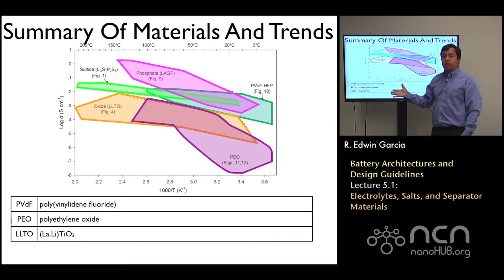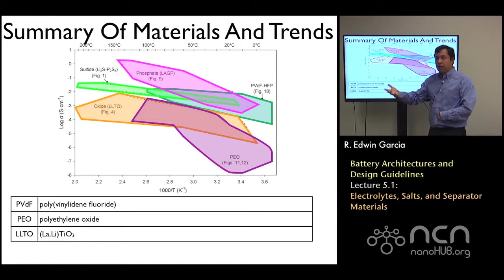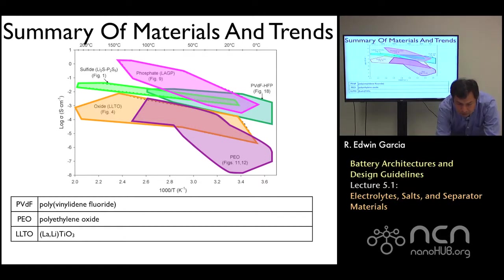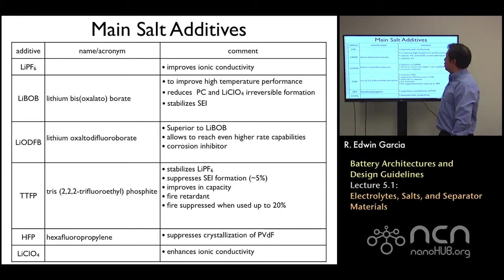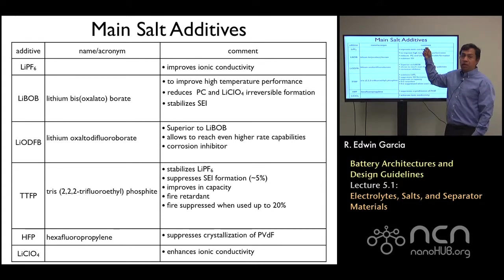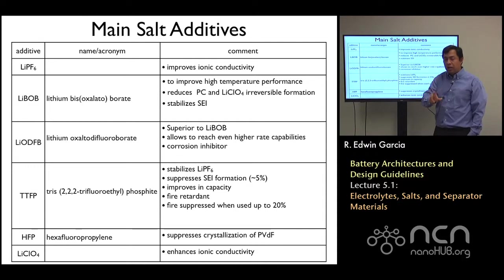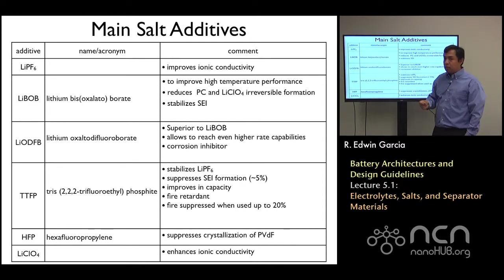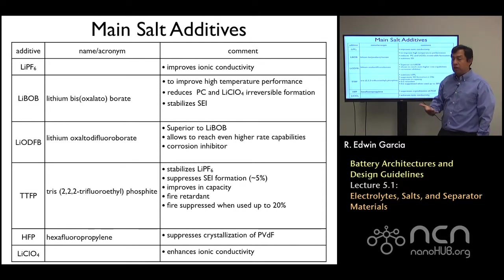The electrolytes themselves only provide the medium through which lithium can transport. You really also want to add salts to increase their performance. LiPF6 is one of the main salts used — it gives you the advantage of improving conductivity. You do have to tune it, because if you put too little, you will not have enough conductivity, and if you put too much, you will also not have enough conductivity. You really need to look closely at how much to use depending on the composition.